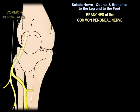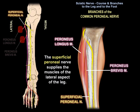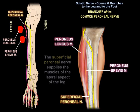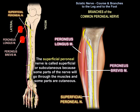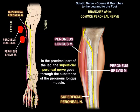The superficial perineal nerve supplies the muscles of the lateral aspect of the leg: the perineus longus and the perineus brevis. It is called superficial or subcutaneous because some parts go through the muscle and some parts are cutaneous. In the proximal part of the leg, the superficial perineal nerve goes through the substance of the perineus longus muscle.